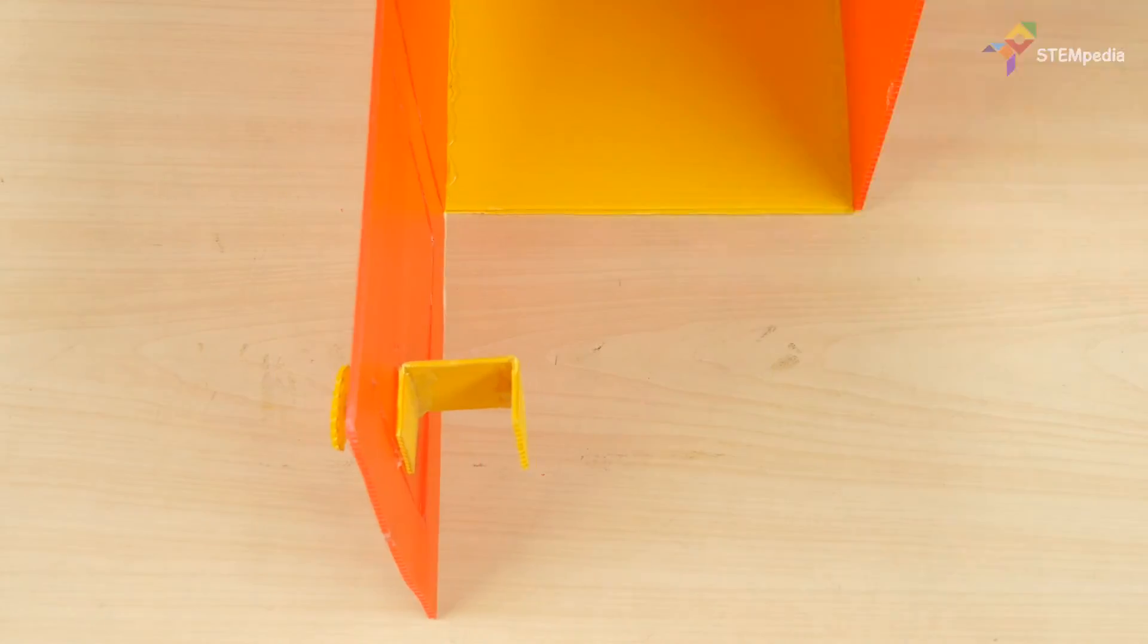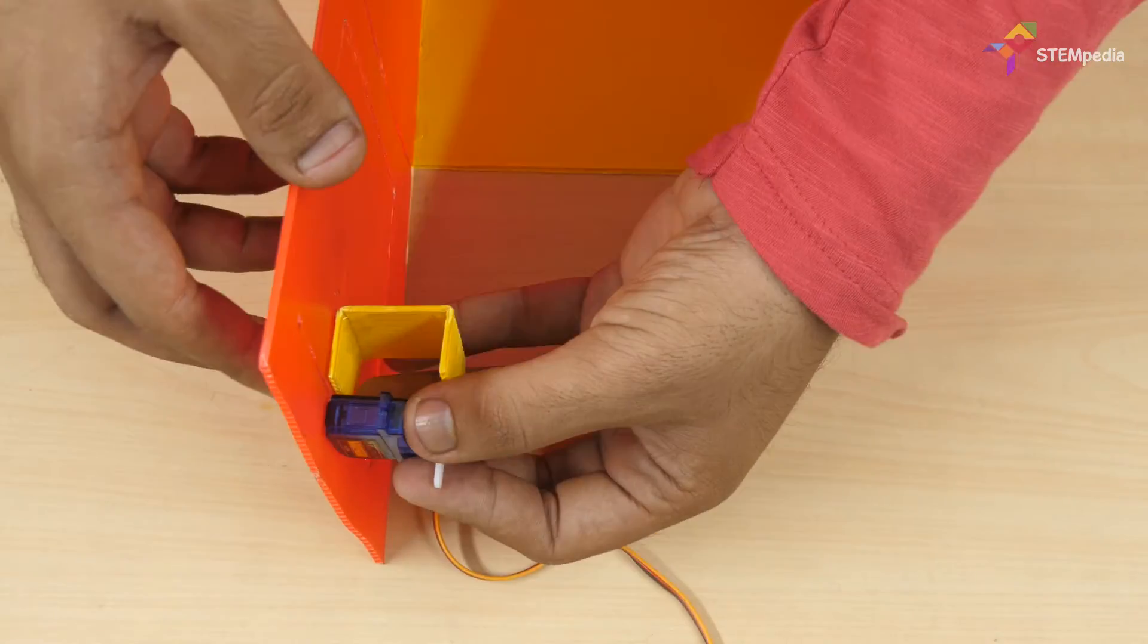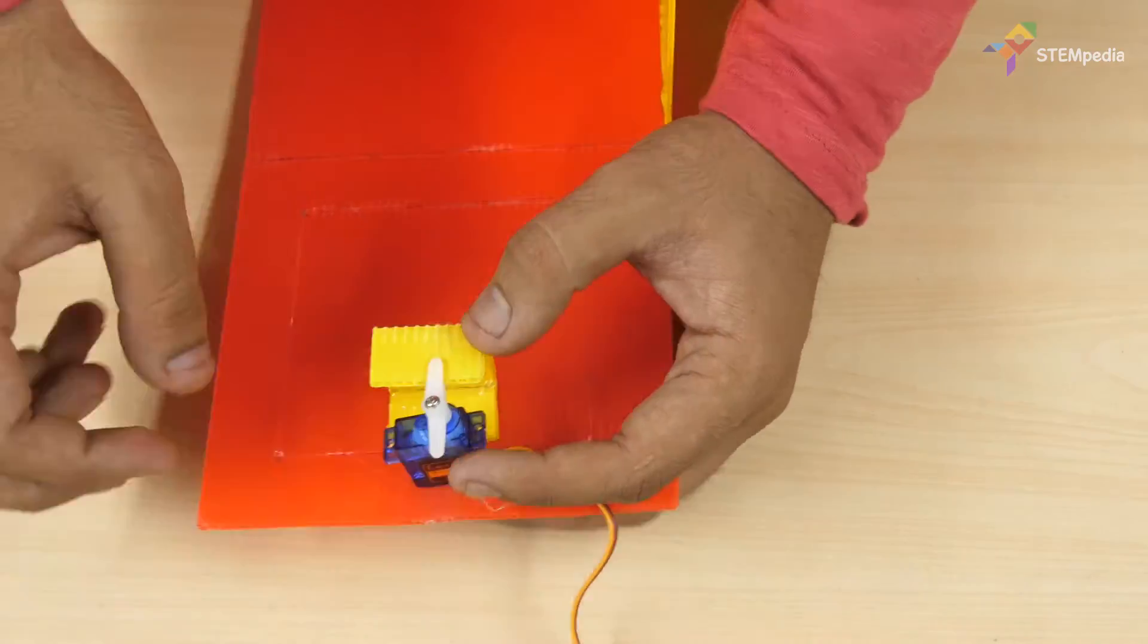Paste the servo motor at back of the door using hot glue. Make sure that it interlocks properly with the U-shaped structure.